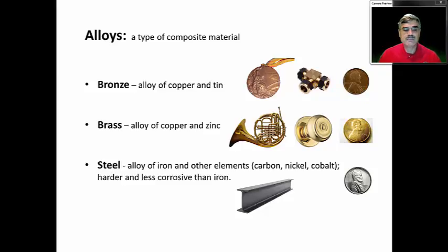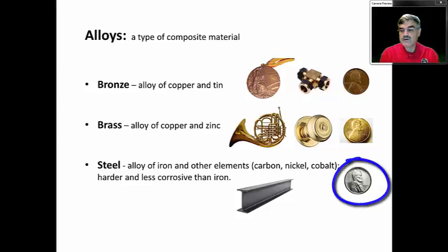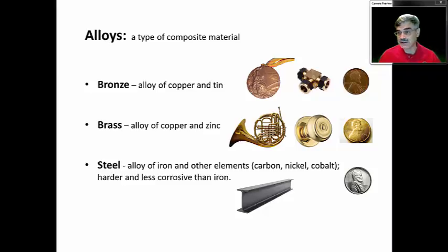Another alloy of importance is steel, which is an alloy of iron with a variety of other elements. There are hundreds of different kinds of steel — carbon steel, nickel steel, cobalt-containing steel. Steel in general is very hard and less corrosive than iron, and so is used in construction a great deal. There was one year, 1943, when our penny was actually made out of steel — called a steel penny, or what you may have heard of as the steely.